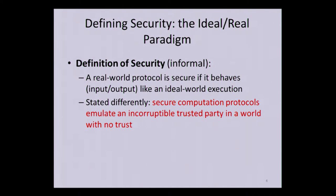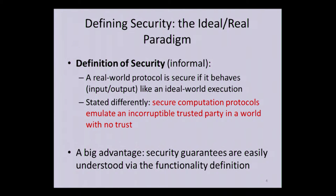We can look at these secure protocols as ideal boxes computed by trusted parties, and consider the world in that way, making things very clear and understandable. In particular, we know exactly what security guarantees we're getting because these ideal functionalities are supposed to be very simple and easy to understand. When we have a clear and simple ideal functionality, we know exactly what we're gaining and what the security guarantees are.